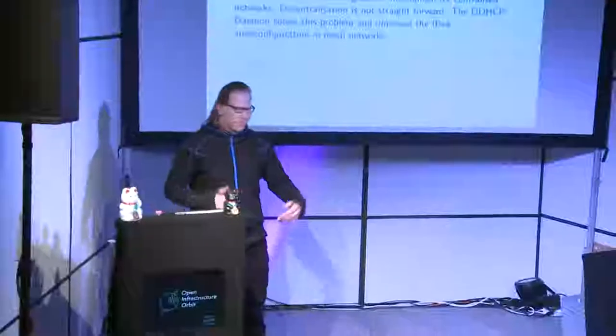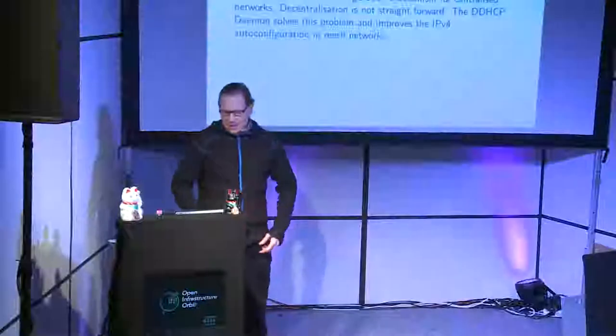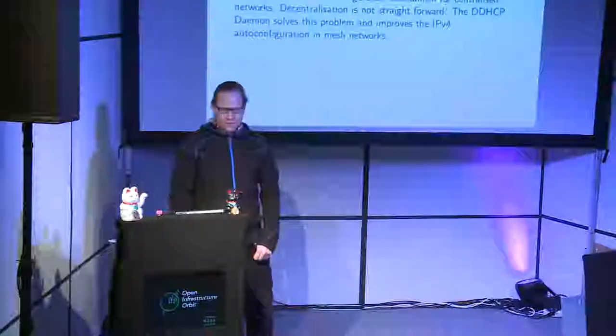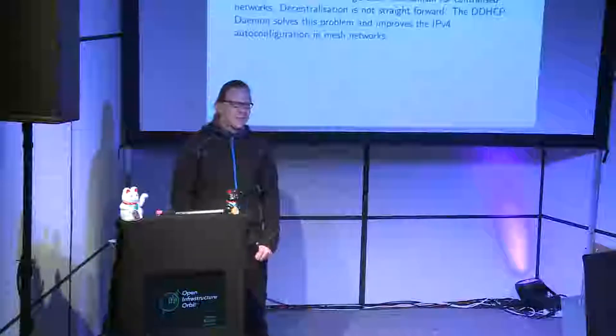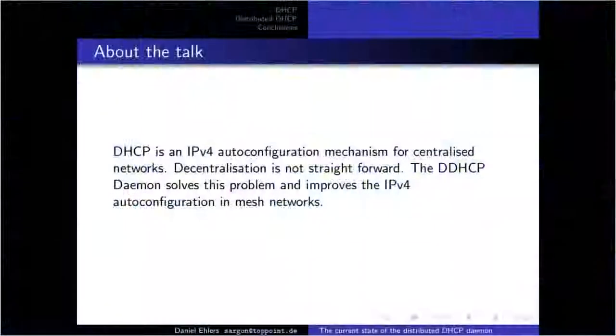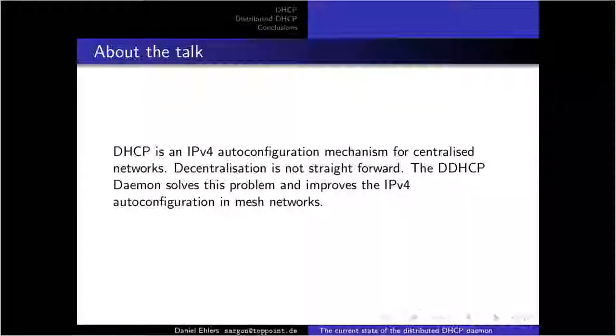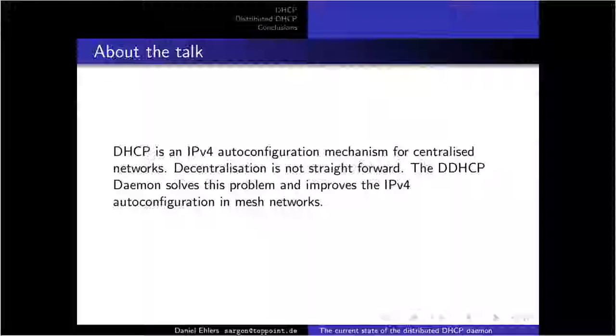So what's this talk about? DHCP is an IPv4 auto-configuration mechanism which was conceived when every network was centrally organized. We tried to decentralize that, and that's not straightforward. But we came out with a solution — the DDHCP daemon solves all the problems we identified and improves IPv4 configuration a lot in mesh networks.